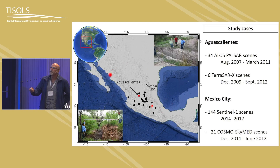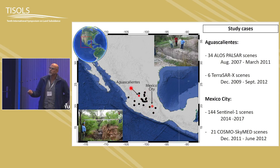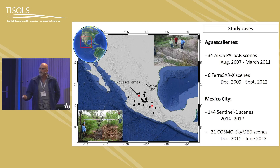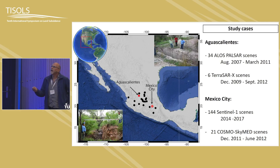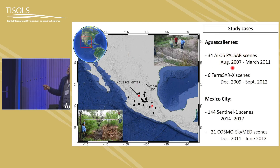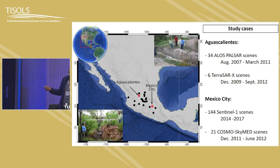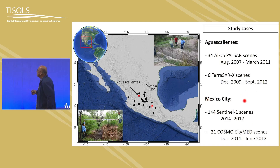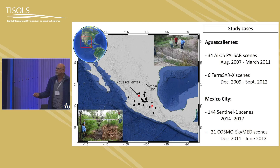These two cities are located in Mexico: Mexico City is in central Mexico and Aguascalientes is to the north. In Aguascalientes there are some really significant faults — they can be two meters apart — that formed due to groundwater extraction. For Aguascalientes, we use ALOS PALSAR data from 2007 to 2011 and SIX-TERAS RX covering a similar period. For Mexico City we have 144 scenes from Sentinel-1 covering 2014 to 2017, and also COSMO-SkyMed from a similar period around 2011 to 2012.